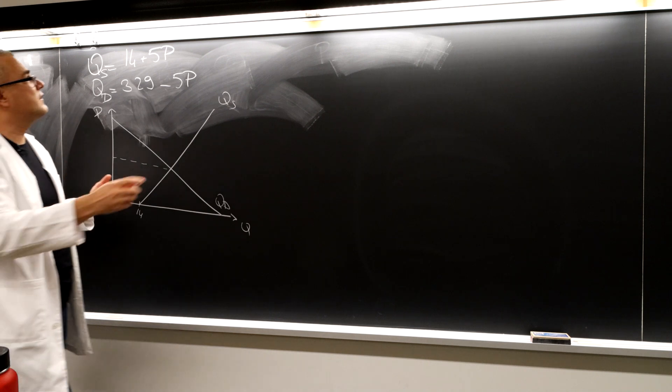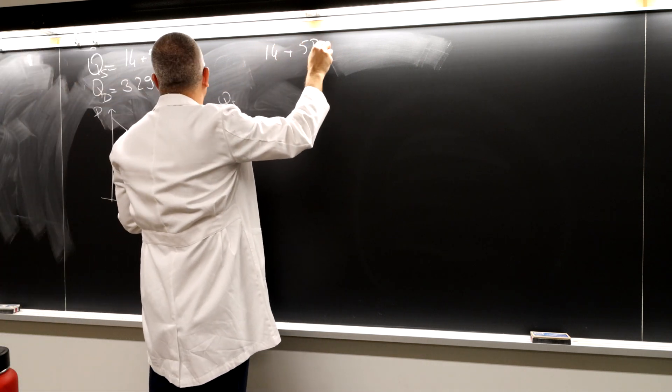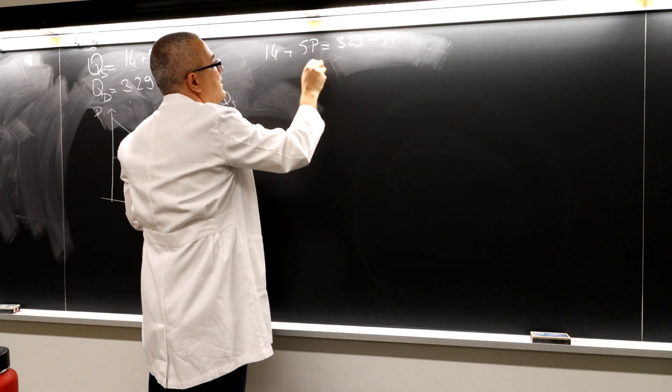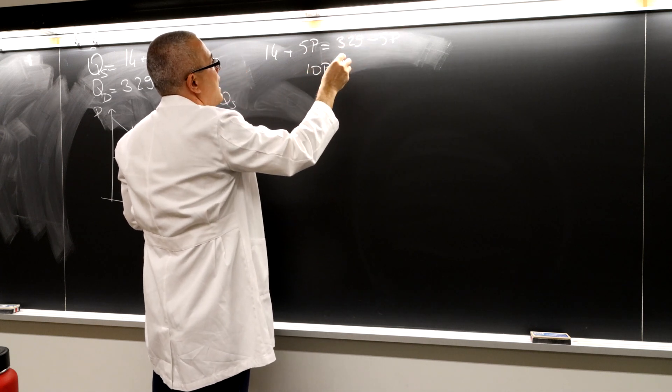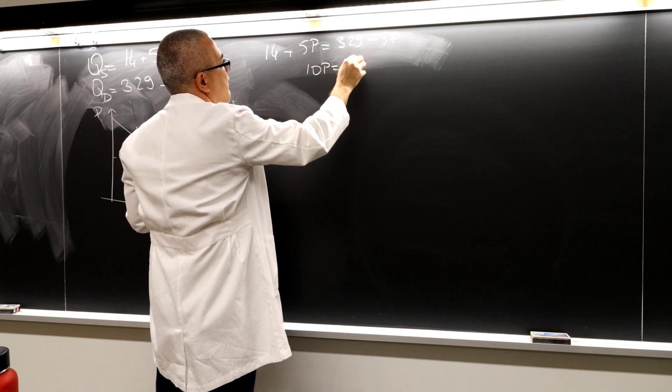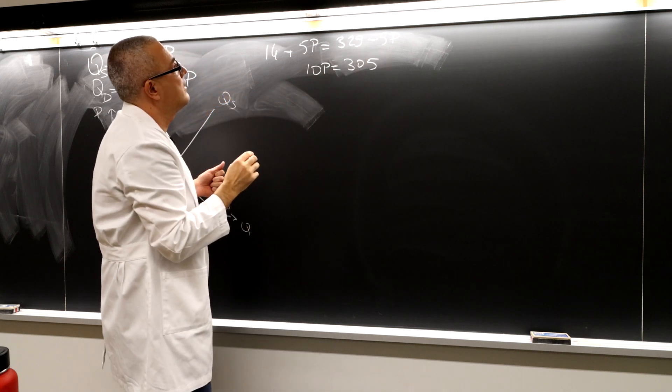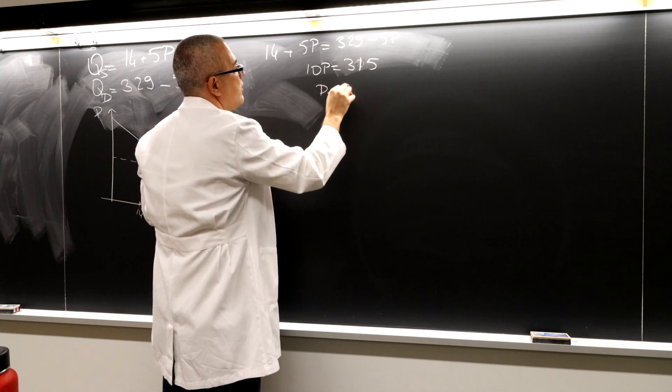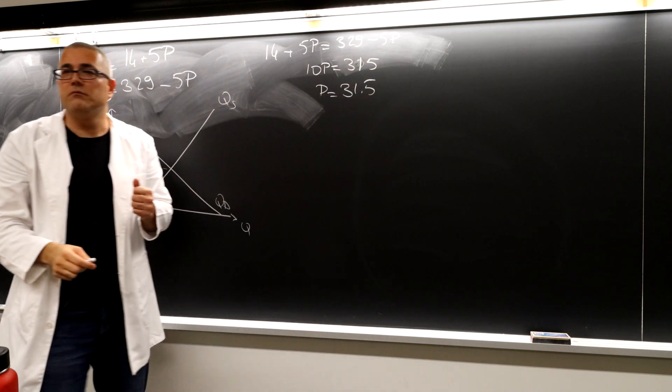What is this price? Well, 14 plus 5P equals 329 minus 5P, so 10P equals 315. So P is equal to 31.5, okay, right?